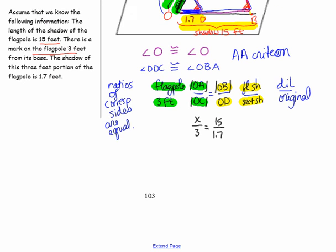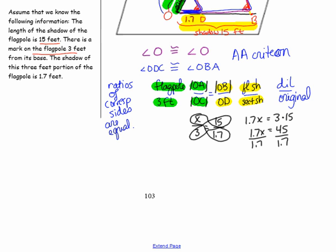Recalling from our study on proportions, this is an equivalent ratio, so we find the value of X that makes it a true equivalent ratio. We solve for X by writing the cross product: 1.7 times X equals 3 times 15. Dividing by 1.7, the value of X rounded to the nearest tenth is 26.5. So the answer is 26.5 feet for the flagpole height.